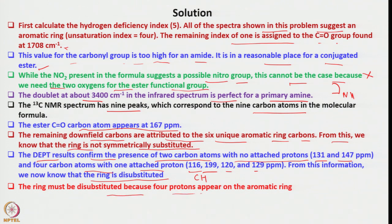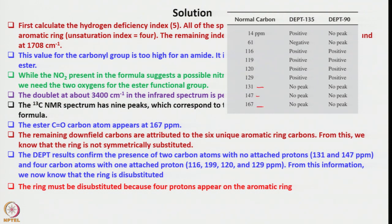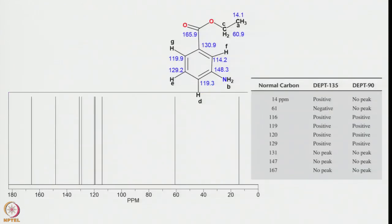Since 4 protons appear in the aromatic region, the ring must be disubstituted, and it is not symmetrically substituted — ruling out para (1,4) substitution. The structure places the amine group and ester group on the aromatic ring. The pattern suggests 1,3-substitution (meta) rather than 1,4 or 1,2, which have more symmetry. The key observation is that proton f is a narrowly spaced triplet (doublet of doublets) suggesting 4J coupling with no 3J couplings — the proton has no adjacent protons, sandwiched between the amino and carbonyl groups.